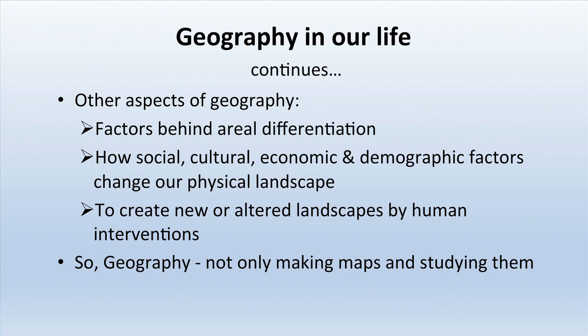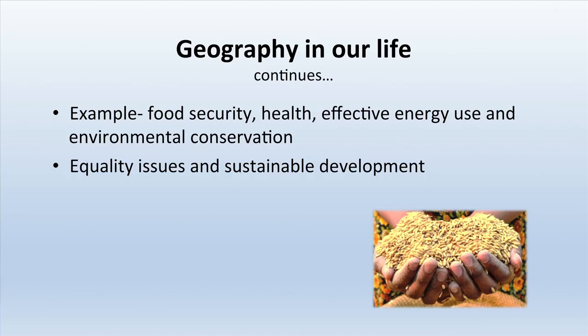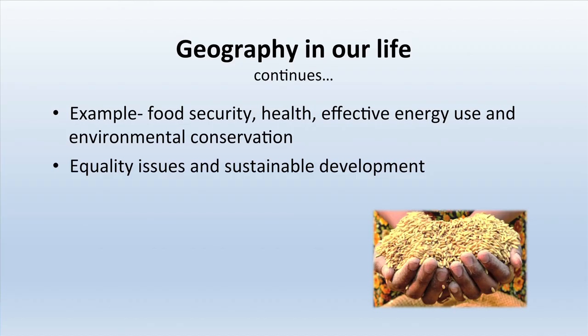Other aspects of geography include factors behind aerial differentiation, secondly how social, cultural, economic, and demographic factors change our physical landscape, and thirdly how human beings create or alter landscapes generated because of physical aspects. Geography is not only about making maps; it includes so many things happening on the earth surface — food security, health, effective energy use, environmental conservation, equality issues, and sustainable development.